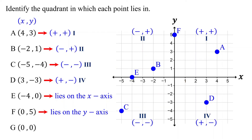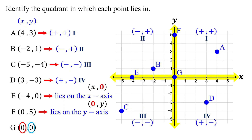In general, if either the x-coordinate, y-coordinate, or both are zero, the point does not belong to any of the quadrants. If the y-coordinate is zero, the point lies on the x-axis. If the x-coordinate is zero, the point lies on the y-axis. If both the x and y-coordinates are zero, the point lies at where the x and y-axes intersect, which is the origin.